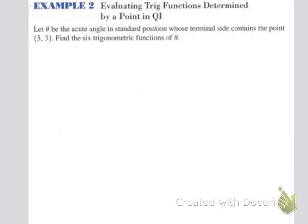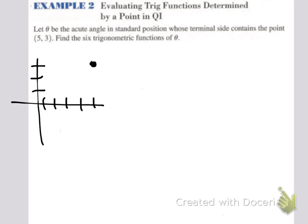Example 2 — we're going to evaluate trig functions determined by a point in quadrant 1. Let theta be an acute angle in standard position whose terminal side contains the point (5, 3). Find the 6 trigonometric functions of theta. First things first is to plot the point (5, 3) — 1, 2, 3, 4, 5 across and 1, 2, 3 up. The terminal side contains that point.